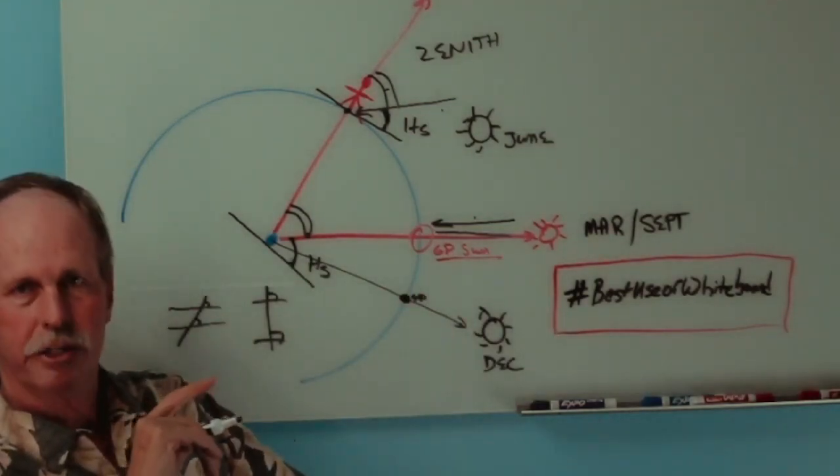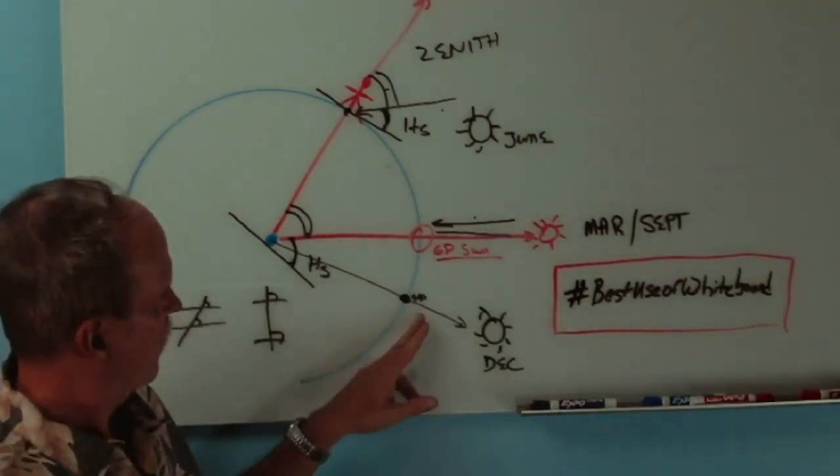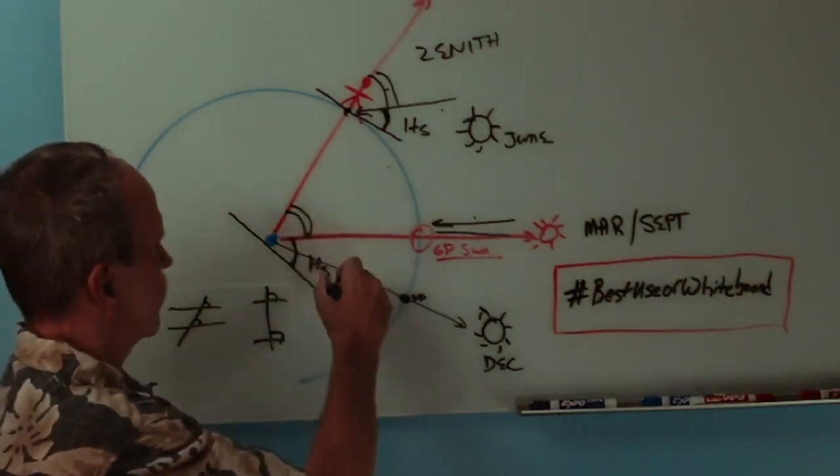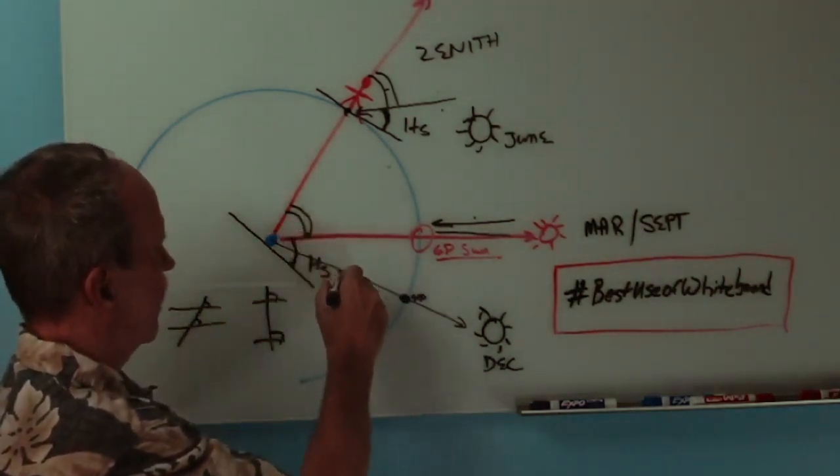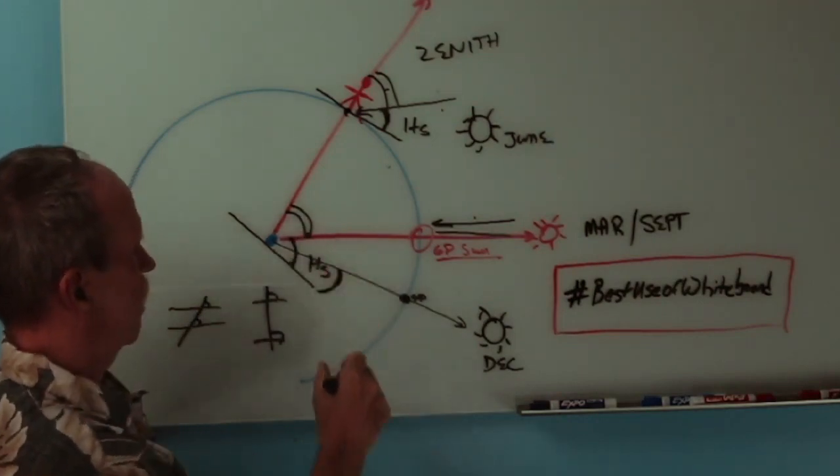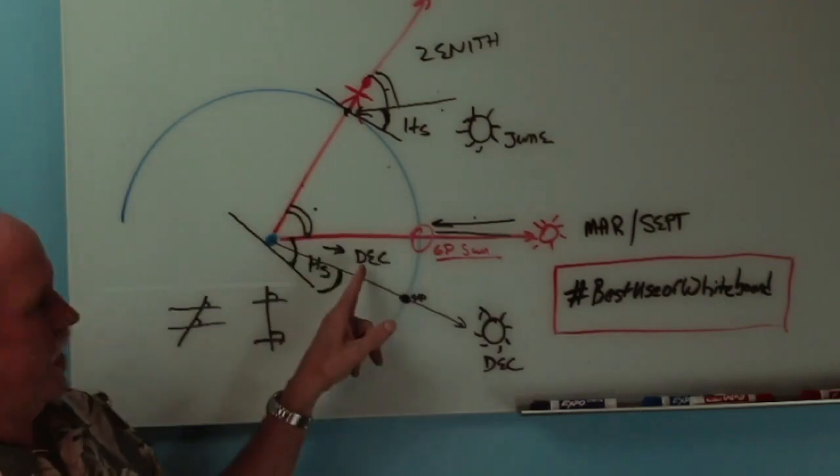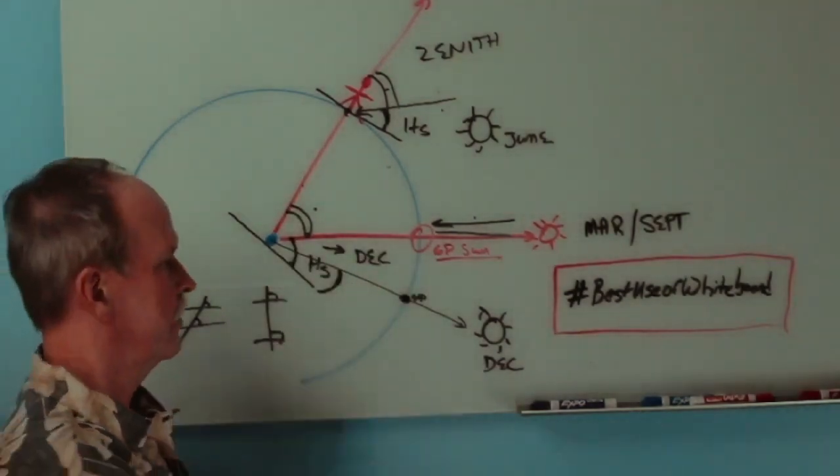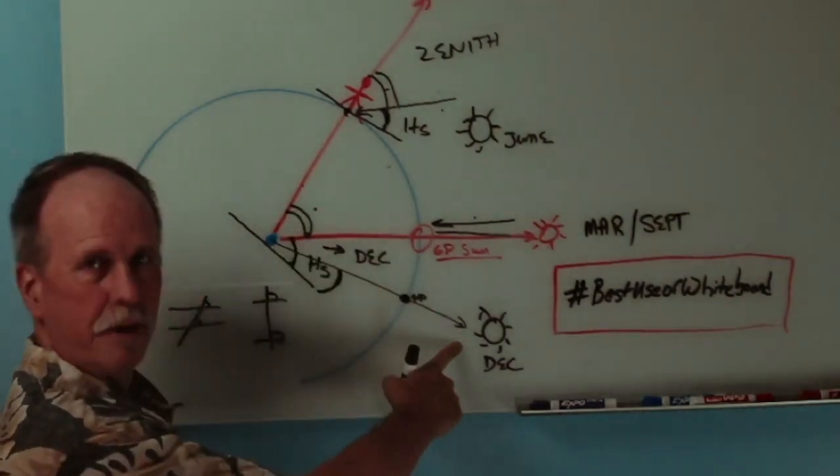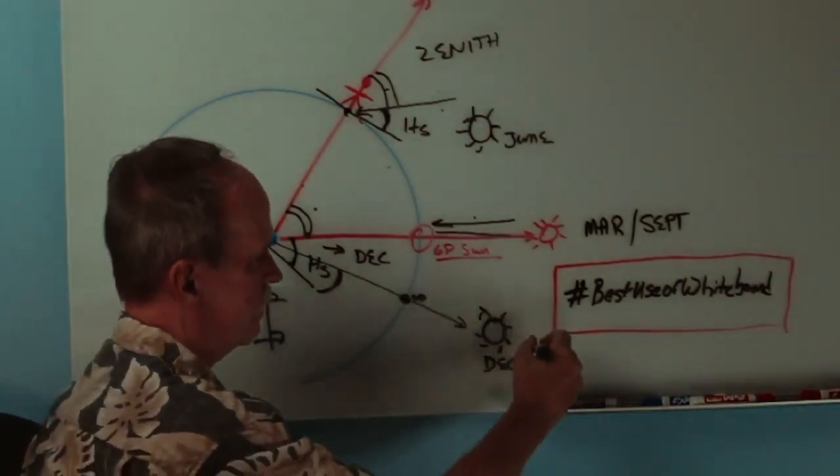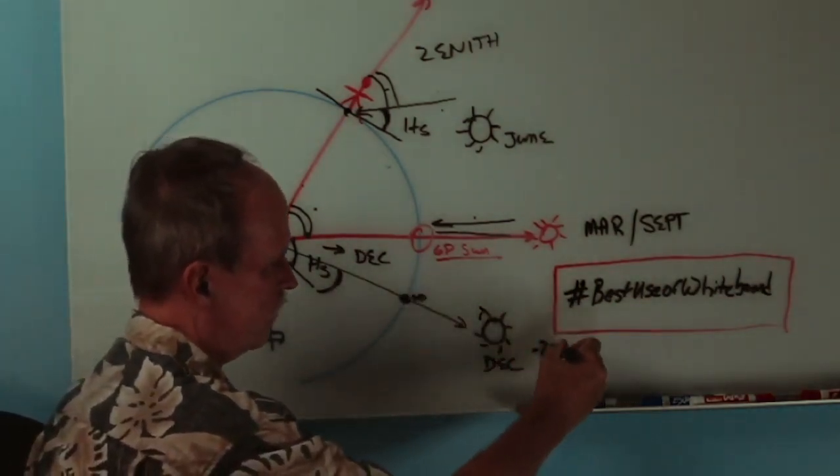So what angle are we going to measure with our sextant? Well, that is the line to the Sun. So what we're going to measure is that angle right there. We want this angle. Well, that angle is called the declination of the Sun because the Sun is below the equator. And in this case, at the December solstice, it would be negative 23.5.